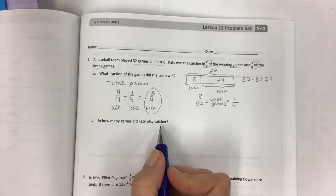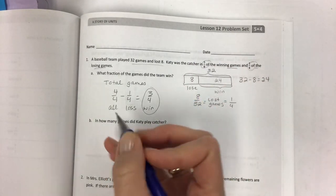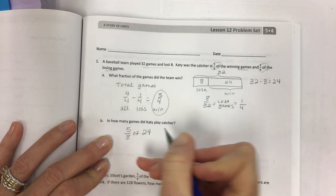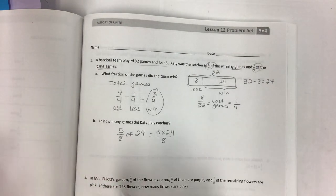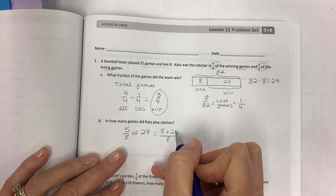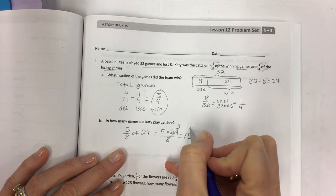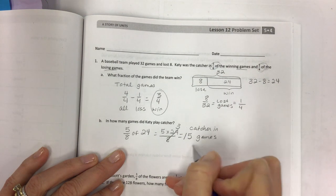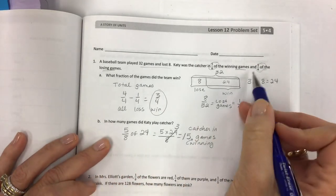In how many games did Katie play catcher? She played catcher in wins and losses, so we're going to use the fractions now. 5/8 of the winning games of 24. So we're going to do 5 times 24 over 8. Remember, in the previous lessons we've been learning about the commutative property and moving that denominator back and forth so that we can simplify. 24/8 is going to give you 3. So Katie is catcher in 15 games that are winners.